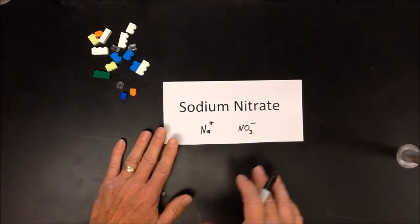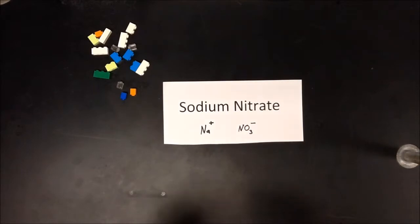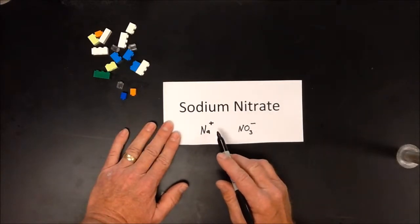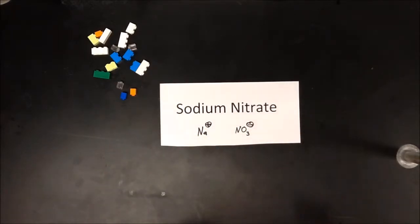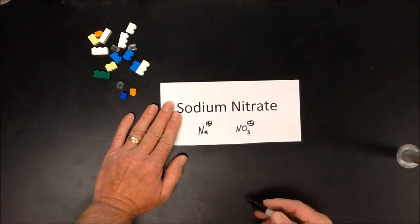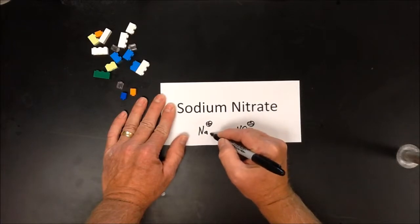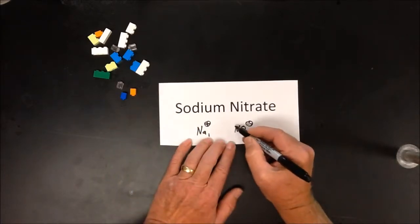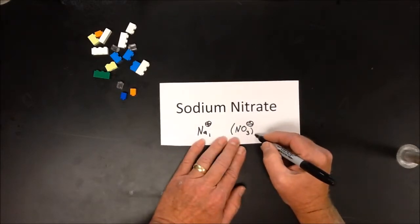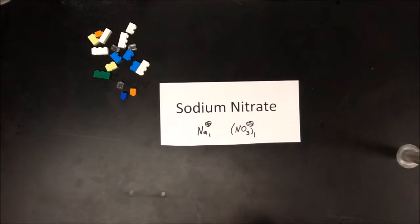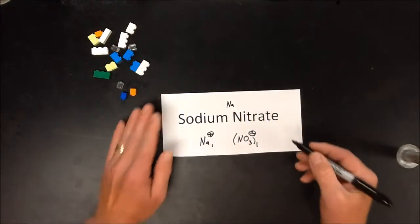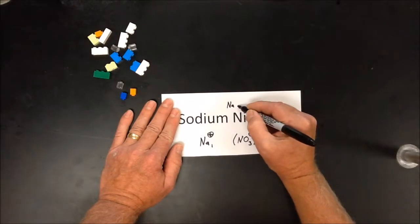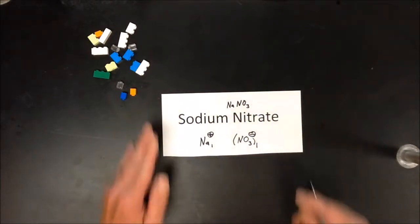Traditionally I'd tell students to use the least common multiple. I've got a plus 1 and a minus 1, so the LCM of 1 and 1 is 1. I need one of each. Since this is a polyatomic ion I'll temporarily put parentheses around it, but since there's only one of each, I don't need the subscript 1 or the parentheses. The formula is simply NaNO₃.